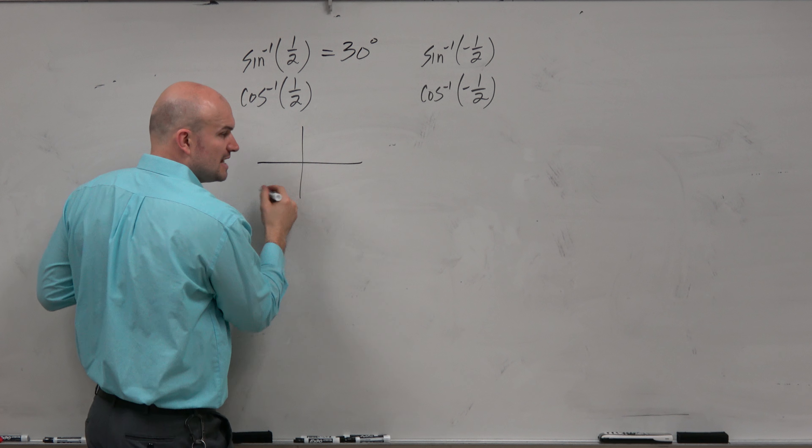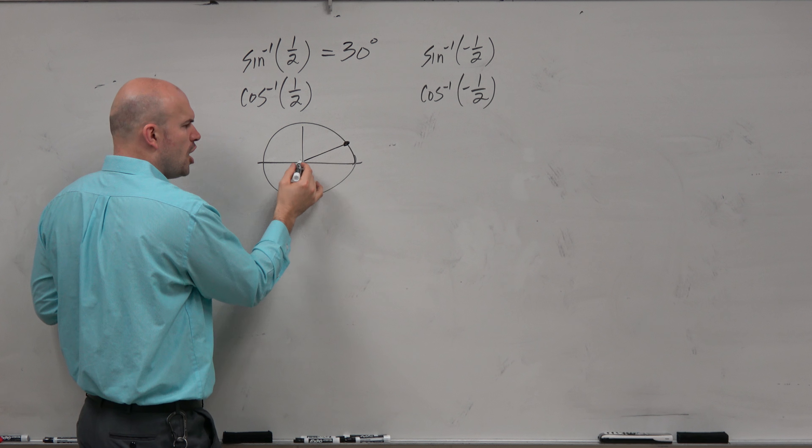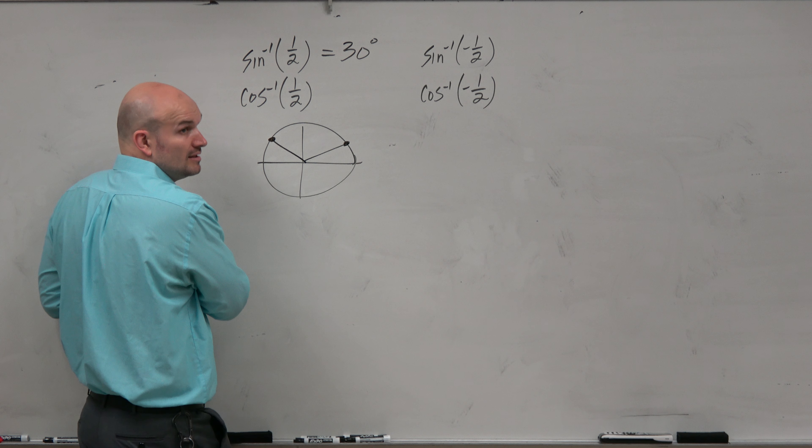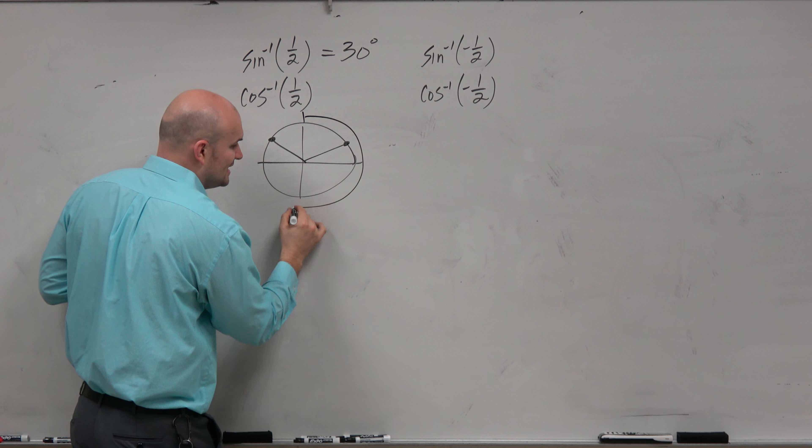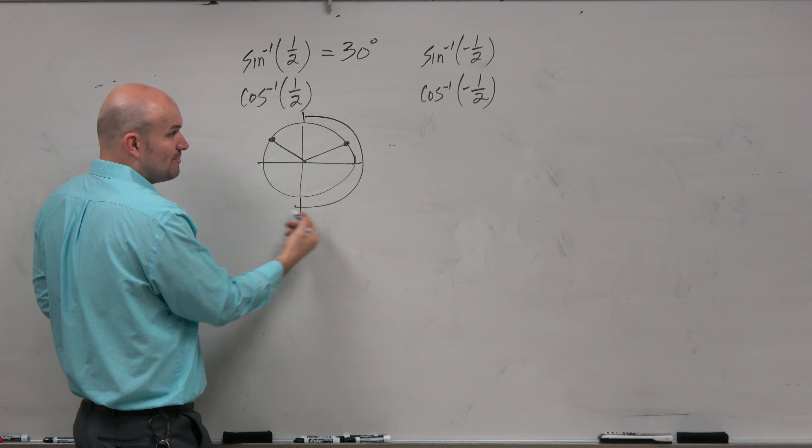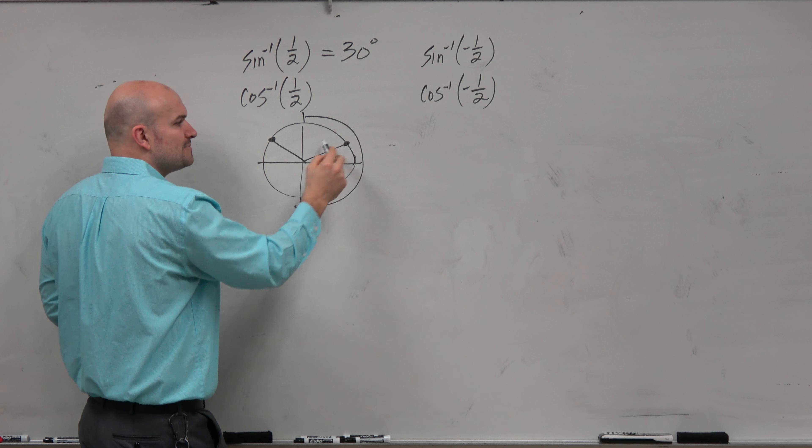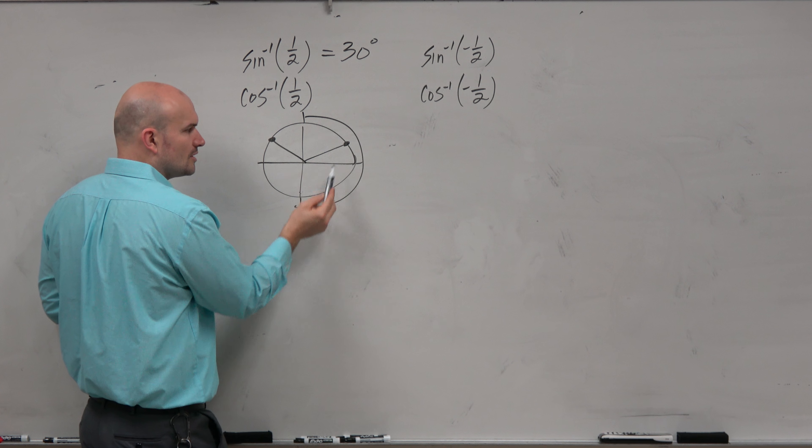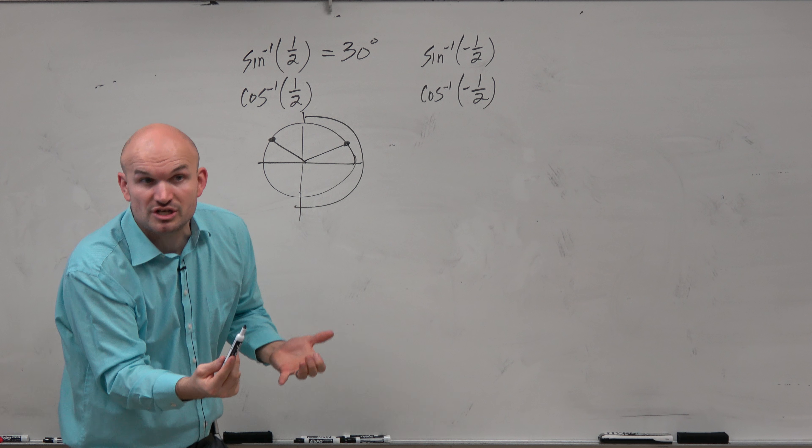And this kind of comes into that point. Remember from the unit circle, we have 30 degrees right here. But you say, oh, but what about 150 degrees? That's true as well. But remember, sine is restricted. The sine inverse function has that domain restriction of sine to be angles only in the first and the fourth quadrant. That's why 30 degrees is the only answer, because it's an inverse function. You can't have more than one answer.